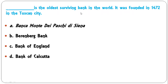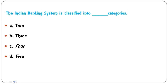Which is the oldest surviving bank in the world? It was established in 1472 in the Tuscan city of Siena, Italy. The bank is named Monte dei Paschi di Siena, and it is the oldest surviving bank in the world.